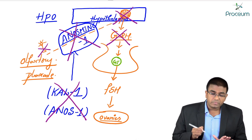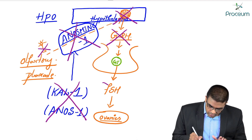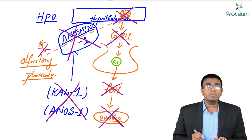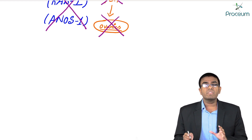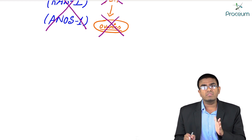Whenever there is no GnRH, there is no FSH. With no FSH, the ovaries are not being stimulated. If the ovaries are not stimulated, the follicles are not growing. If the follicles are not growing, there is no ovulation — anovulation is seen.